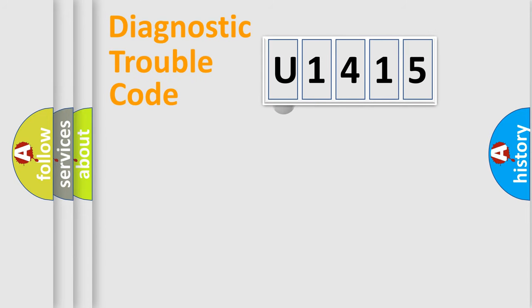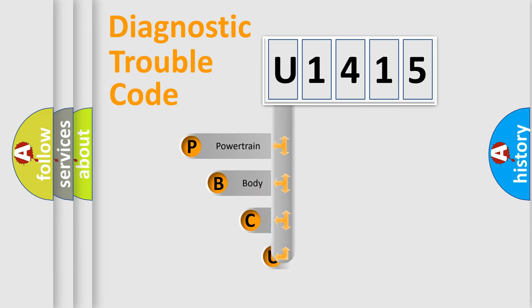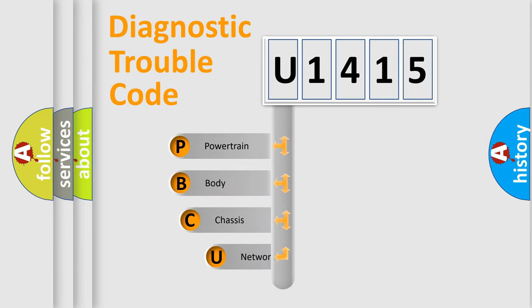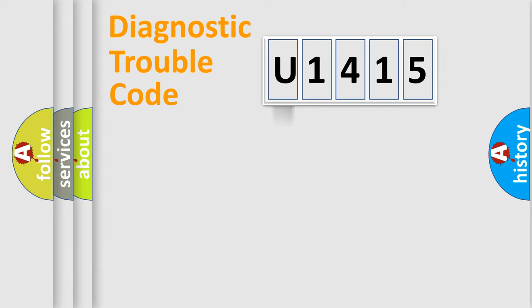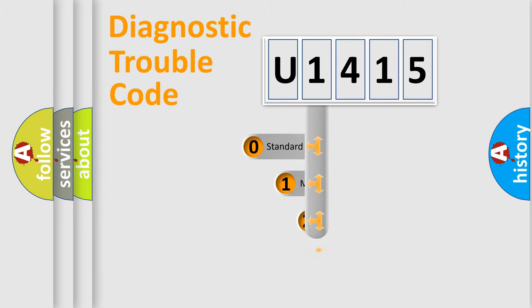First, let's look at the history of diagnostic fault code composition according to the OBD2 protocol. We divide the electric system of an automobile into four basic units: powertrain, body, chassis, and network. This distribution is defined in the first character of the code.